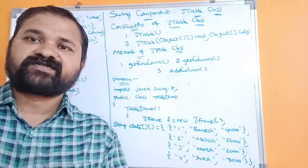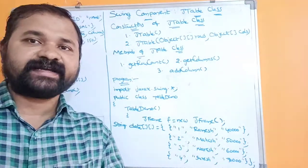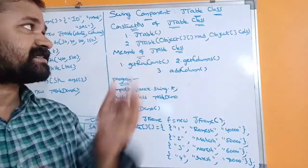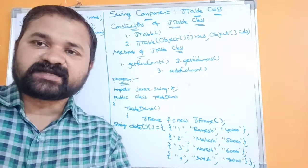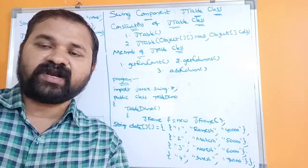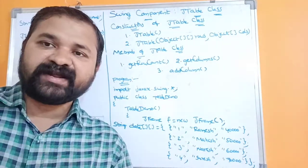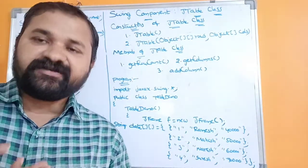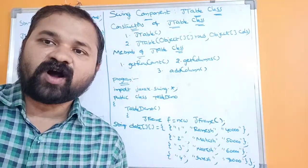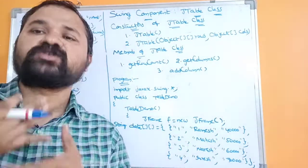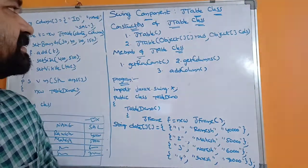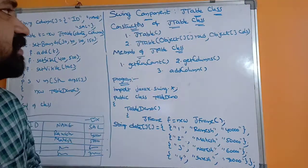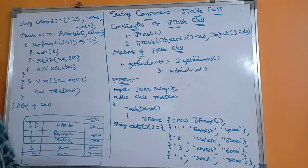Now let's see about the Swing component JTable class. JTable is mainly useful in order to display information in the form of rows and columns. Let's see the constructors of the JTable class.